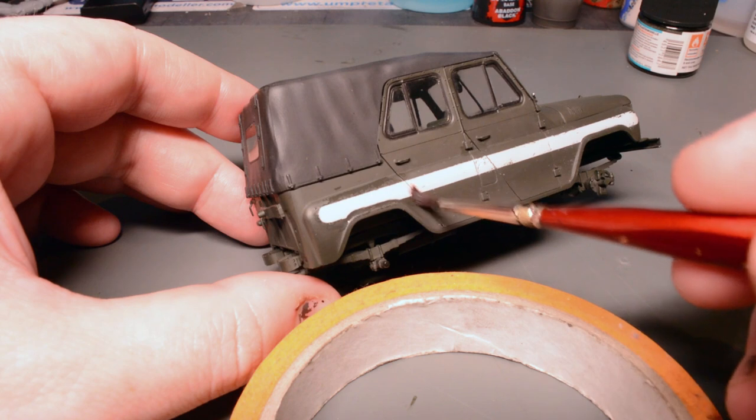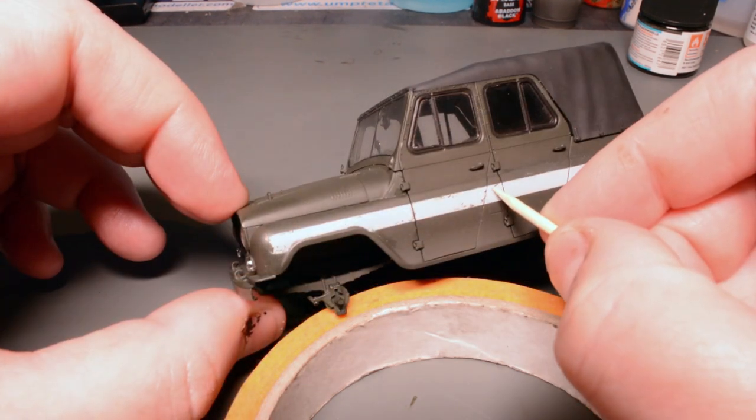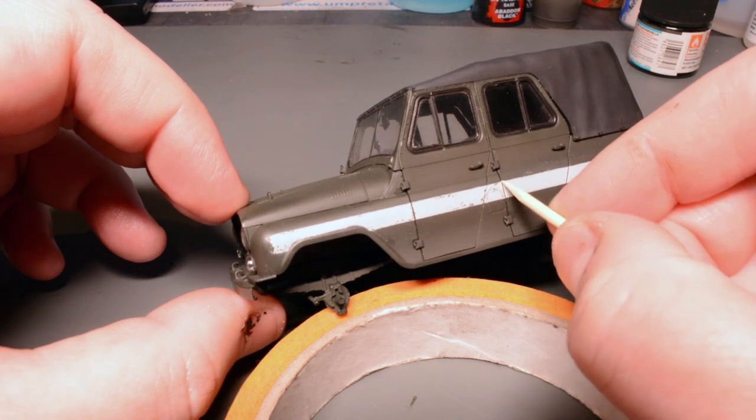I added the water over the top of the white stripe to reactivate the hairspray and to get things moving I used a finely pointed cocktail stick to concentrate the chipping in the areas where it can be seen the most on the game screenshots.